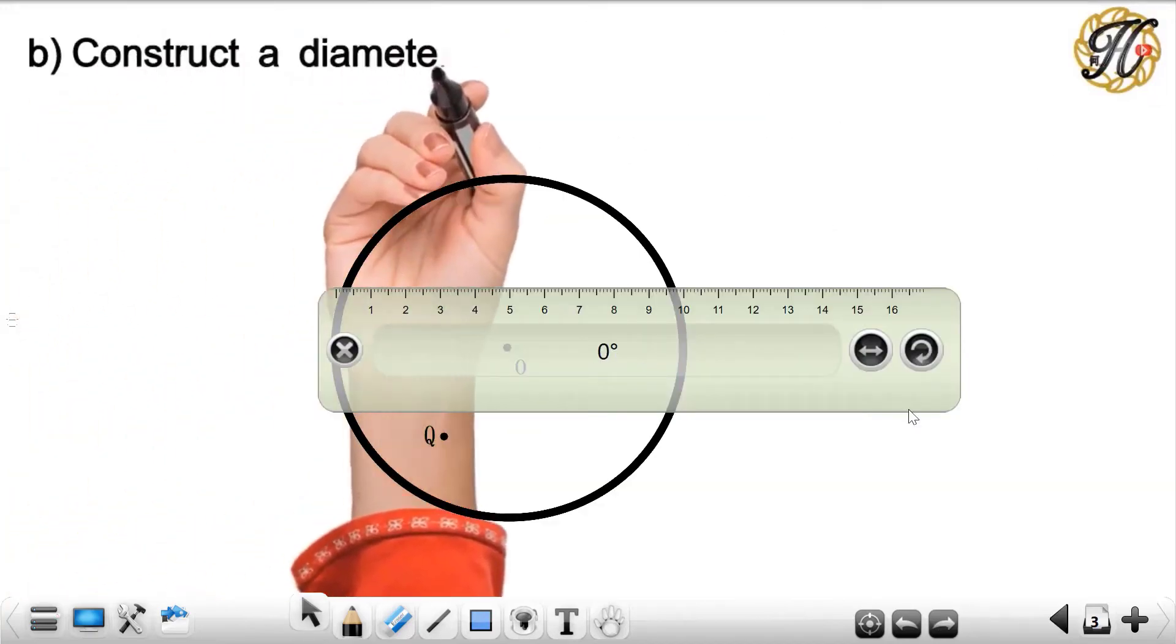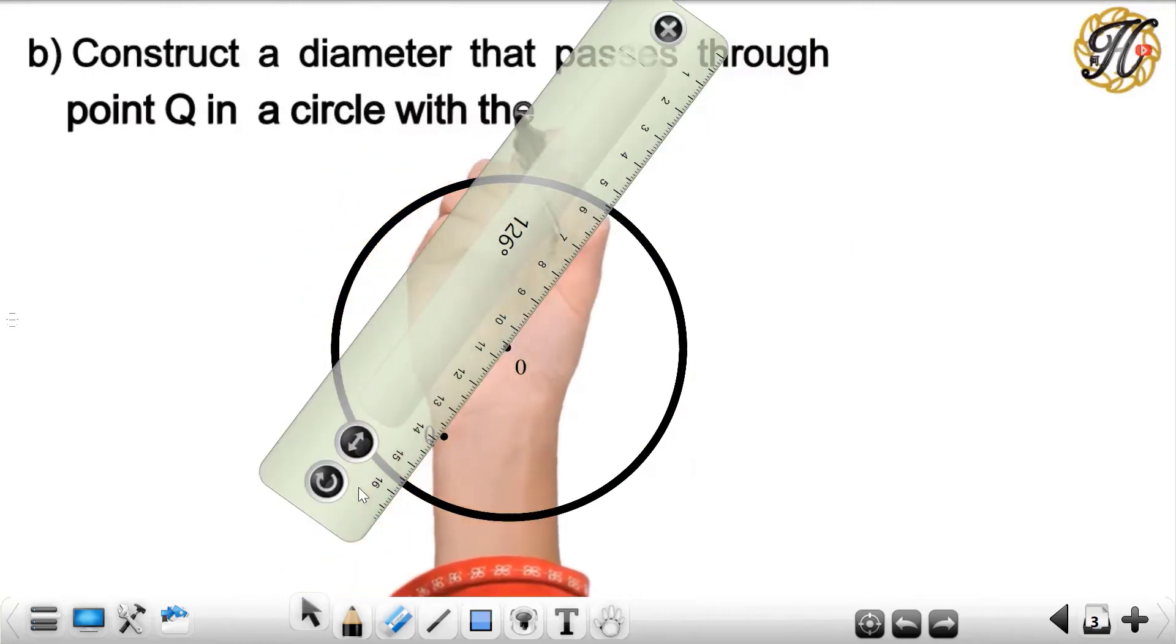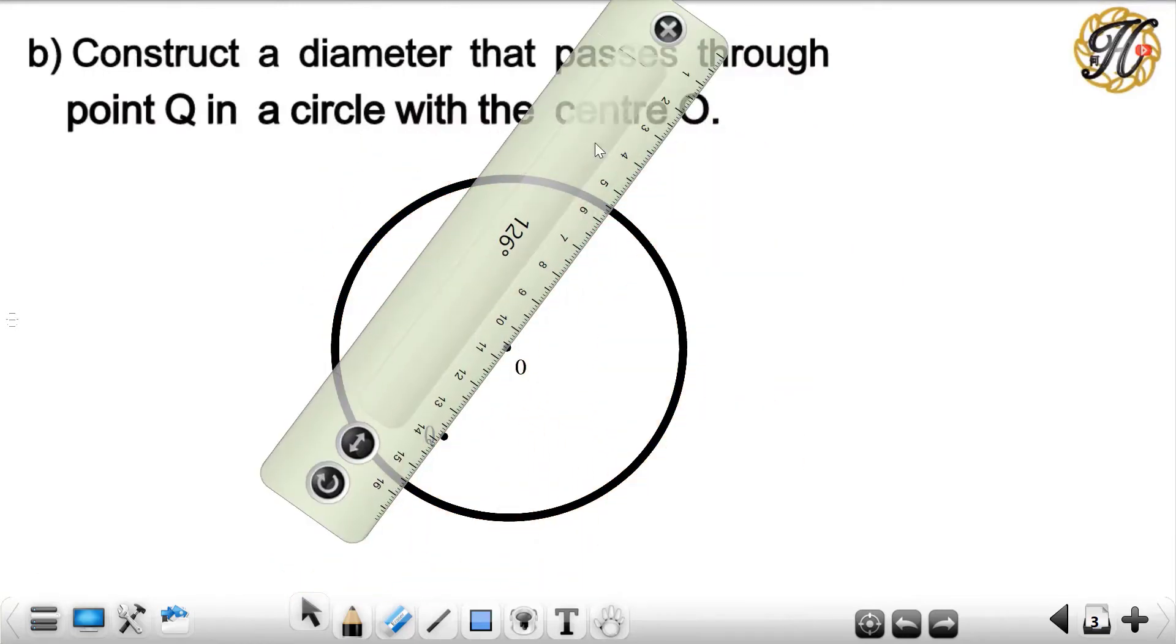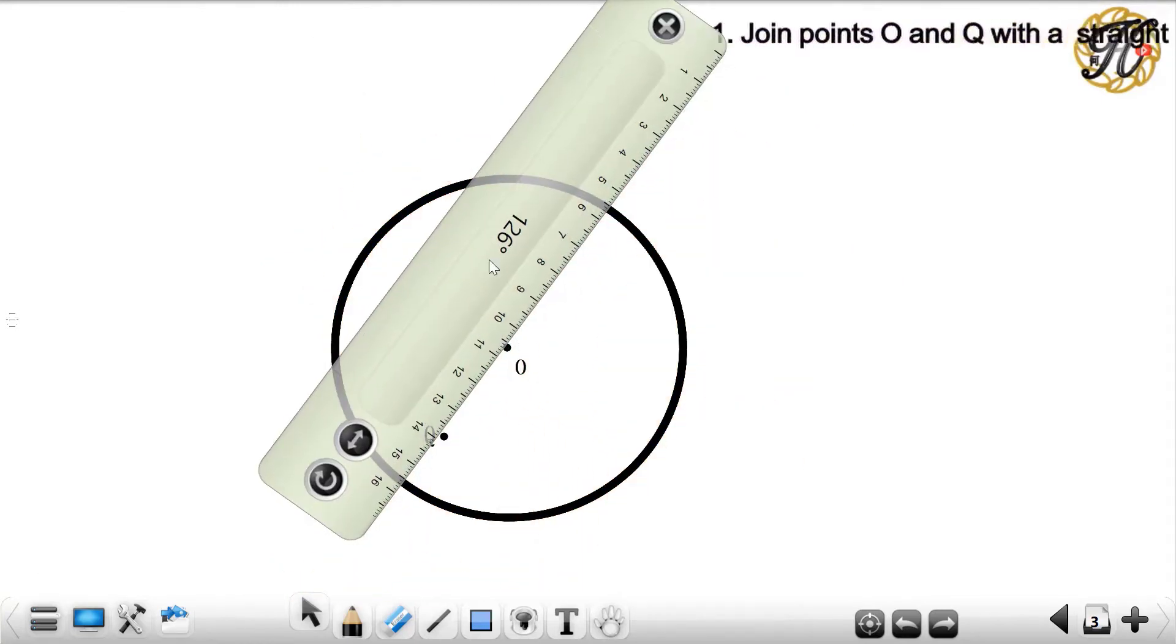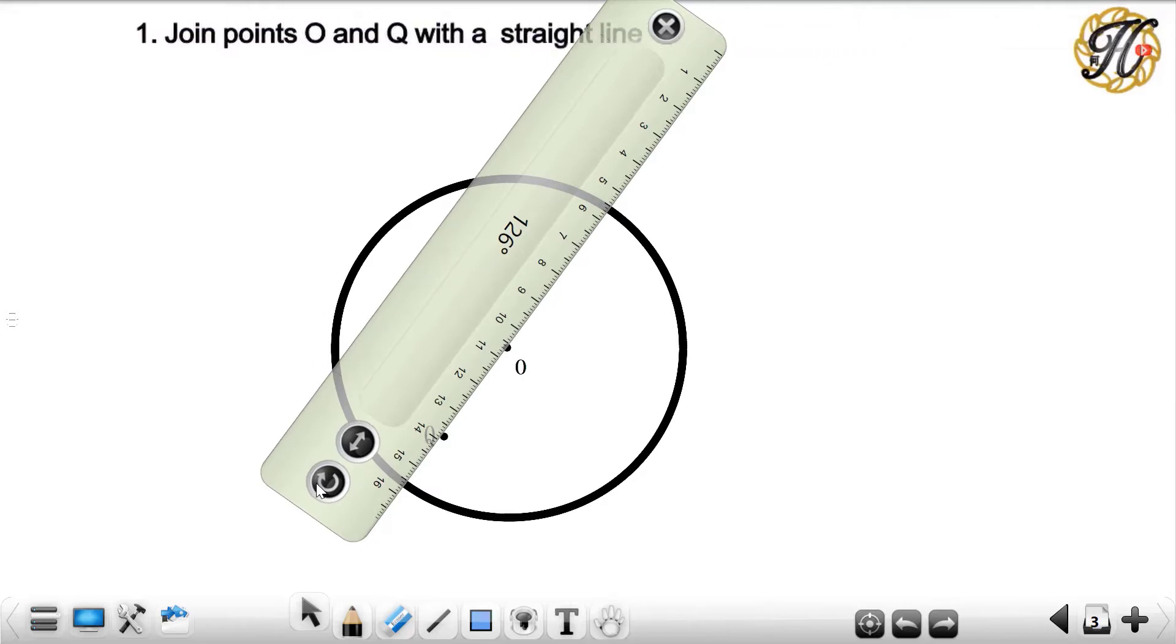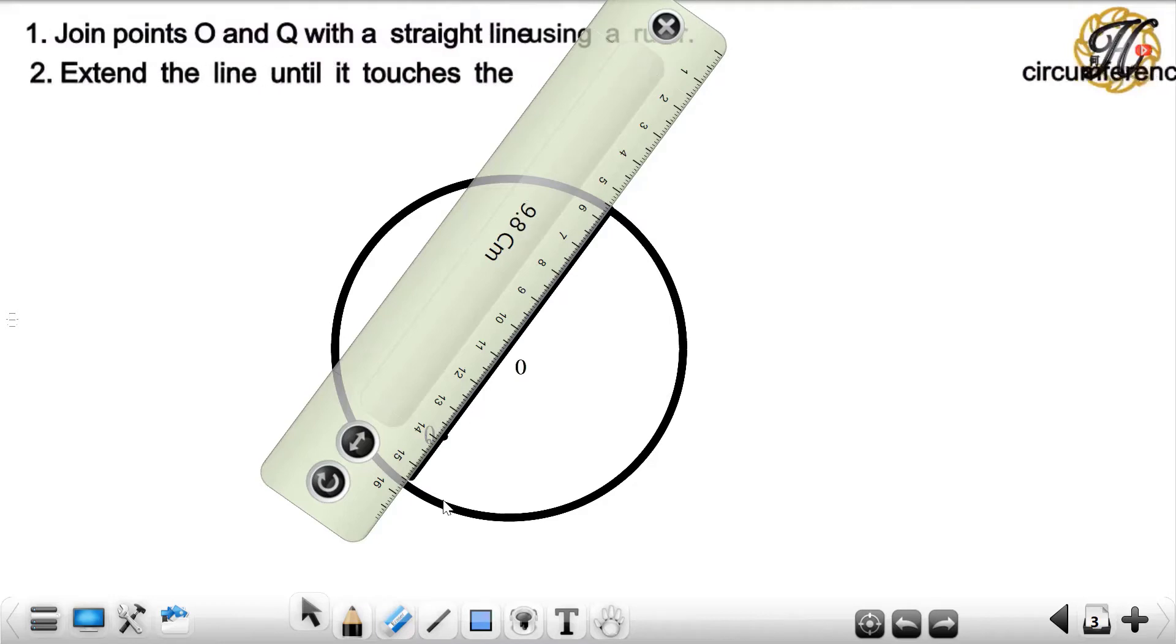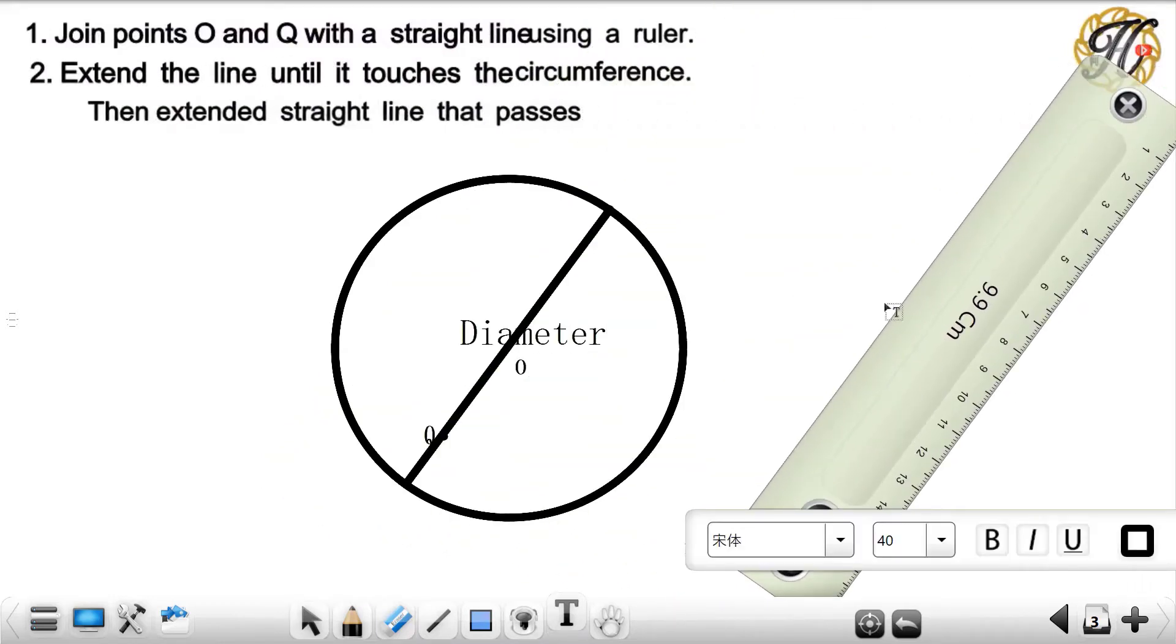Next, construct a diameter that passes through point Q in the circle with the center O. First, join points O and Q with a straight line using a ruler. Second, extend the line until it touches the circumference. The extended straight line that passes through Q and center O is the diameter.